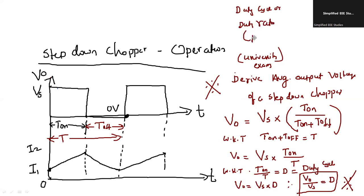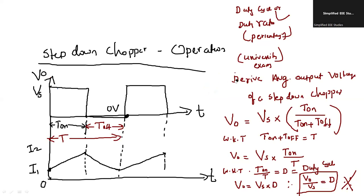Duty cycle is expressed in terms of percentage. The meaning of duty cycle is how long the power electronic switch is on — that is depicted by the duty cycle. So V0 / Vs is nothing but duty cycle or duty ratio. This is the relation between input voltage and output voltage of a step-down chopper or buck converter.